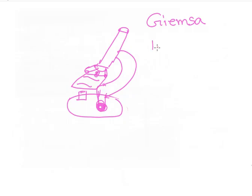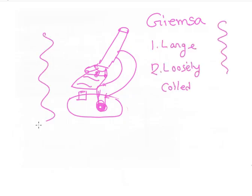It is diagnosed either clinically or under a microscope. Under a microscope stained with Giemsa stain, Borrelia looks like large and loosely coiled organisms.